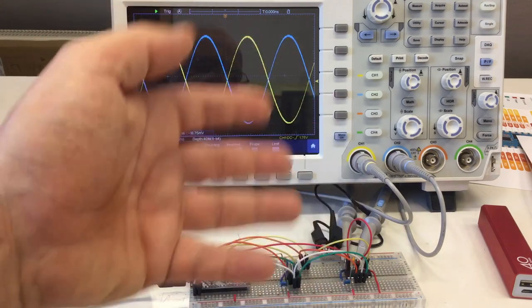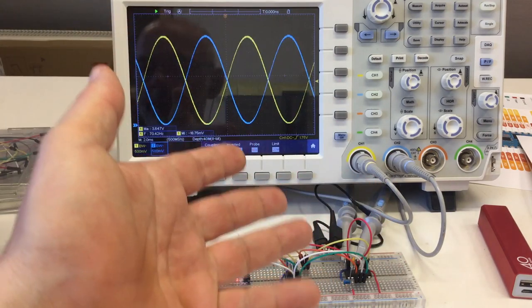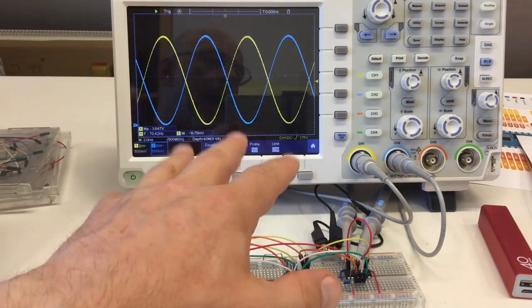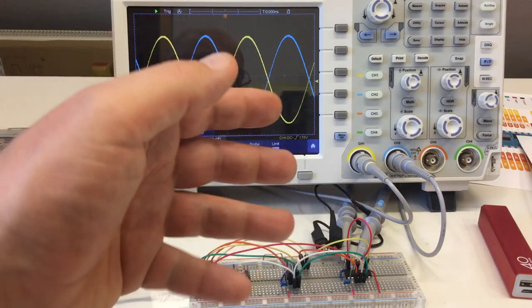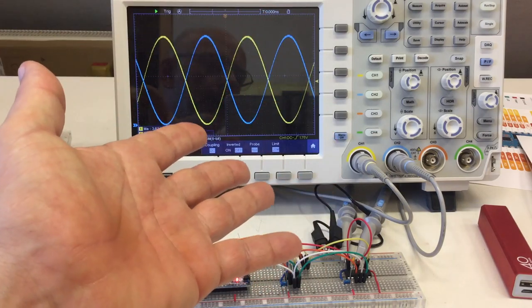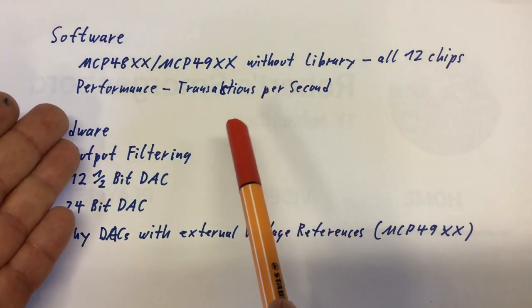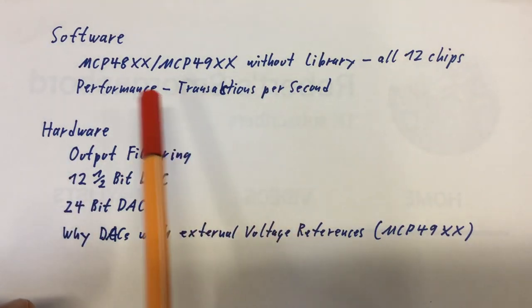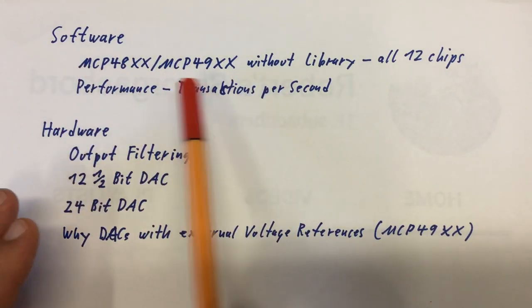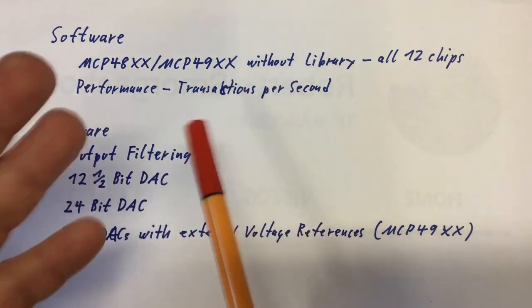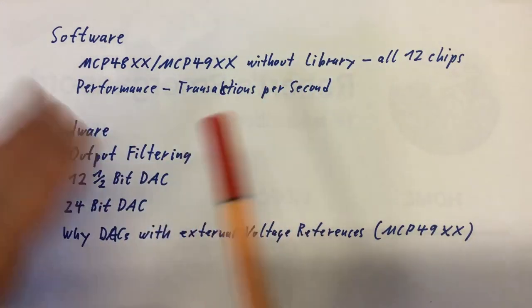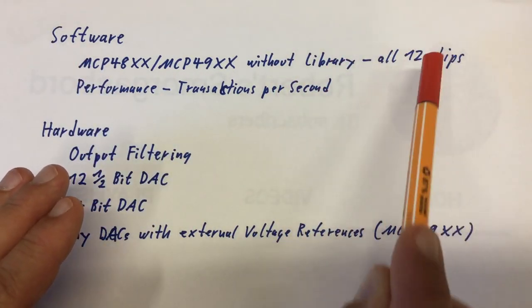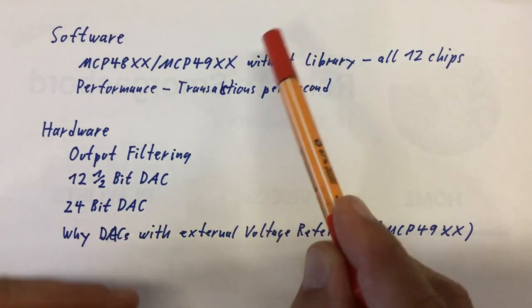You've got enough now to get at least five chips out of that 12 chip MCP48XX 49XX family up and running. So what will I talk about in the next video? I will definitely talk a little bit more about software, especially about driving these DACs without a library because you don't really need a library to drive them. They are quite easy to drive. And that will include all 12 chips of the family, of course.